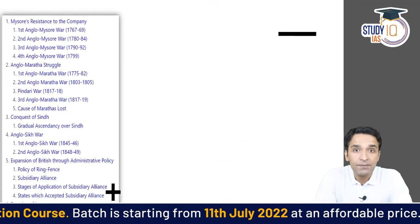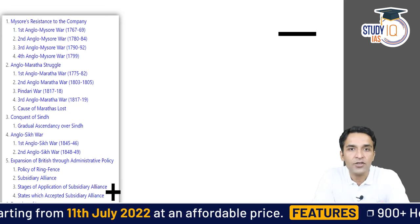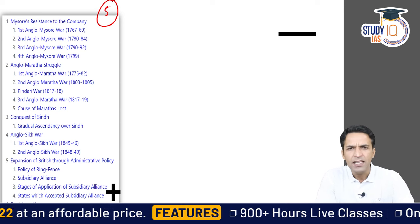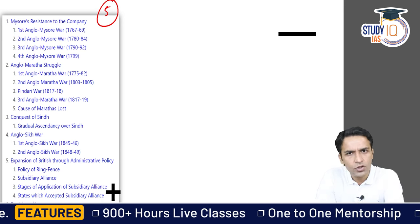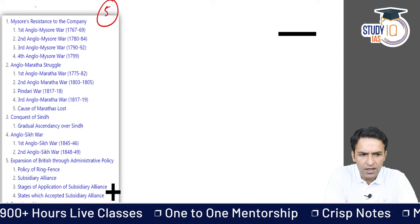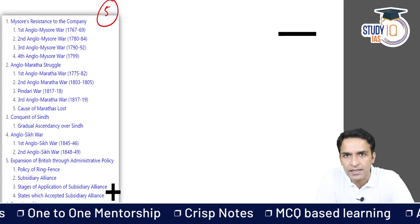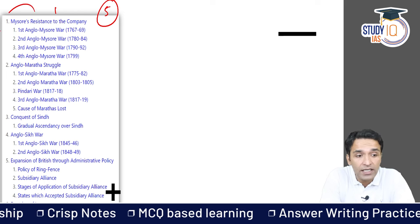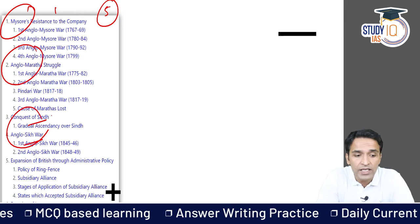We will begin from Spectrum Chapter 5. Lecture 1 of this series actually starts with Chapter 5 of the Spectrum. Chapter 5 is 'Expansion and Consolidation of British India.' The Britishers gained regional powers — we start with Bengal, then there is Mysore, Anglo-Maratha struggles, Sindh, and the Anglo-Sikh War.